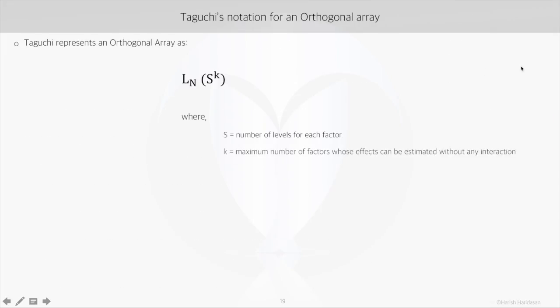And this is the general representation for orthogonal arrays where s is for the number of levels for each factor, k is for the maximum number of factors whose effects can be estimated without any interaction, and n is for the total number of trials during experimentation.